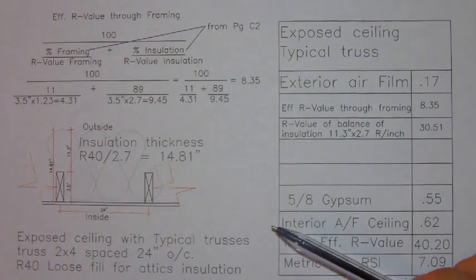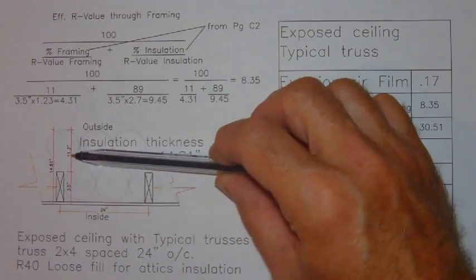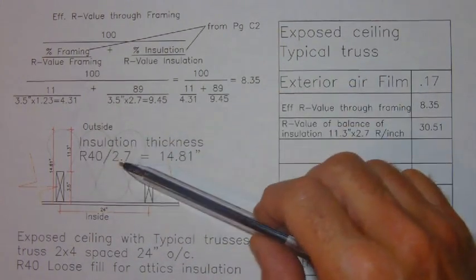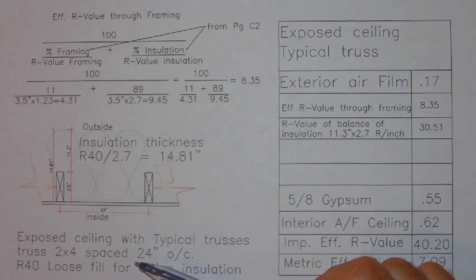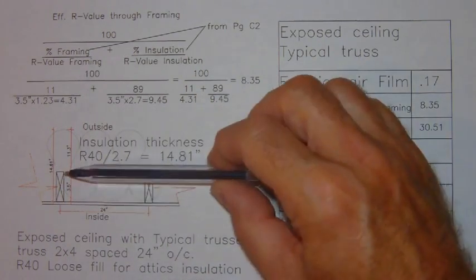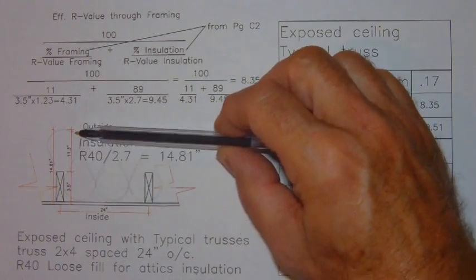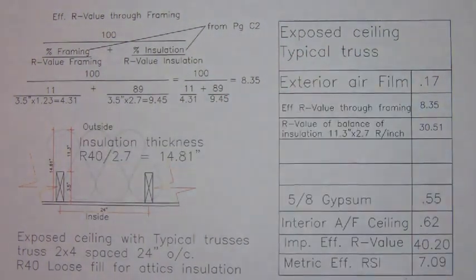So we can establish the R-value by taking 11.3 times the 2.7, and getting the total R-value for this top layer of insulation.